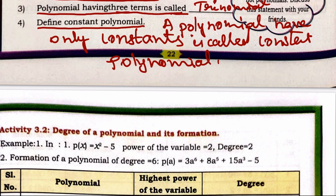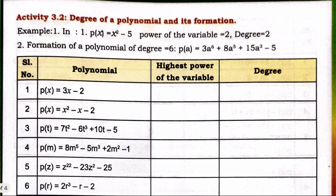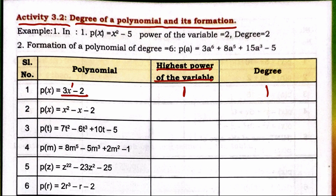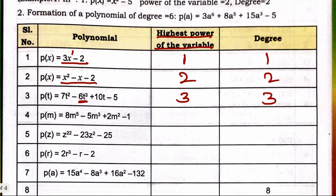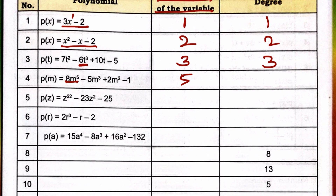Next is Activity 3.2: Degree of a polynomial and its formation. For p(x) = 3x − 2, the highest power of the variable is 1, so the degree is 1. For the next expression, the highest power is 2, so the degree is 2. Then degree 3, and another with degree 5.